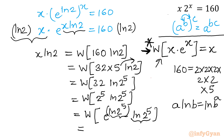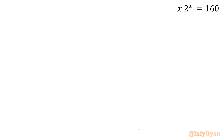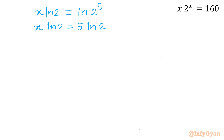So the right-hand side gives Lambert W of that standard form, which equals ln 2 to the power 5, which equals 5 ln 2. On the left-hand side we have x ln 2. So I write x ln 2 equals 5 ln 2. Since ln 2 is a non-zero constant, I can cancel it from both sides, and x equals 5.